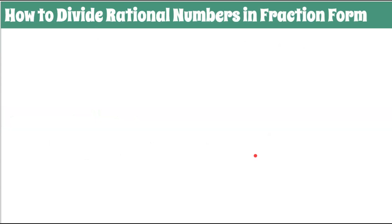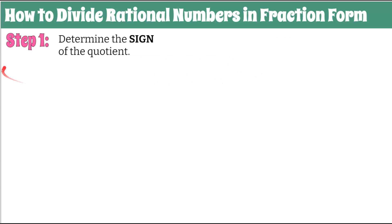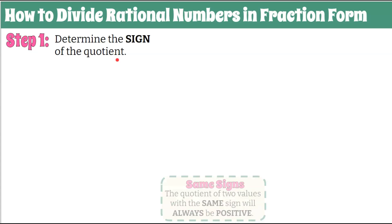Here are six easy steps to dividing any rational number in fraction form. Let's practice these and make them habit. Step one: we're going to first determine the sign of the quotient. It's very important that we do that first, have it in our minds, and record it.